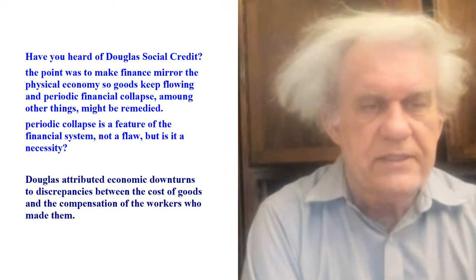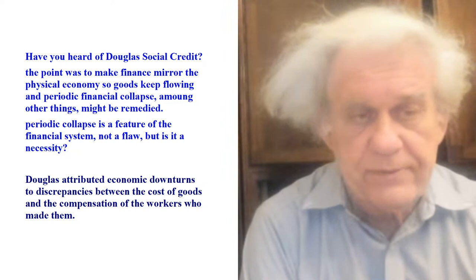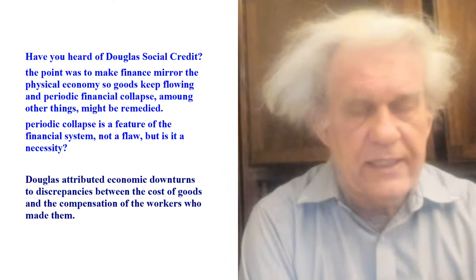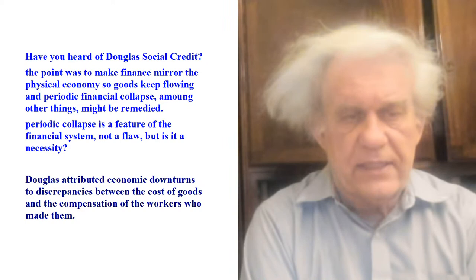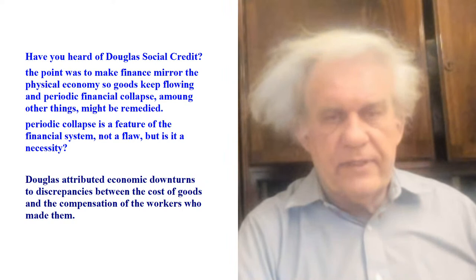Another fellow raises the issue of Douglas social credit. The point was to make finance mirror the physical economy so goods keep flowing and periodic financial collapse might be remedied. Douglas attributed economic downturns to discrepancies between the cost of goods and the compensation of the workers who made them.